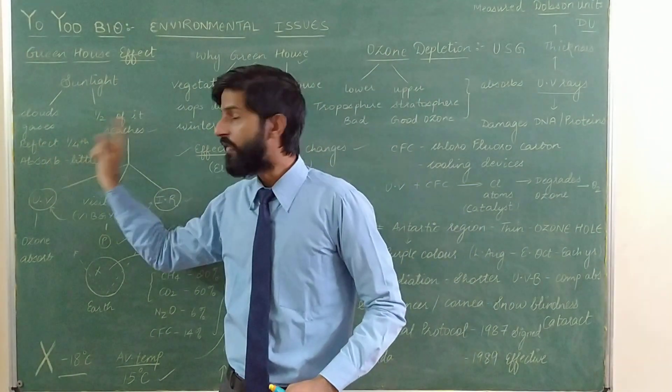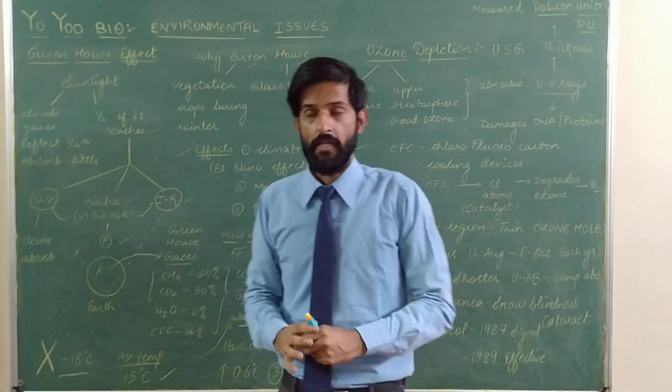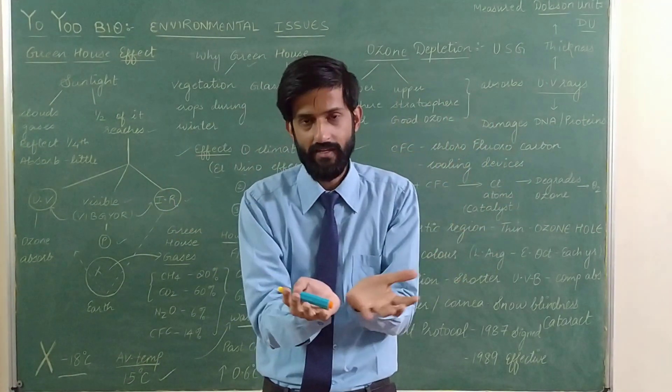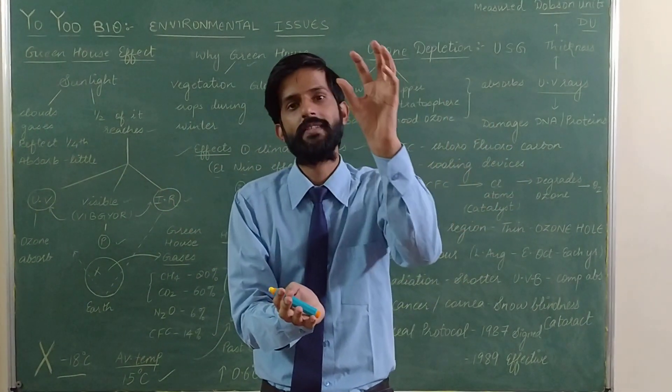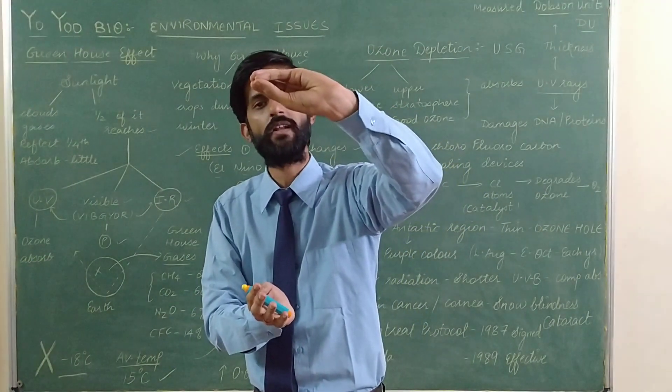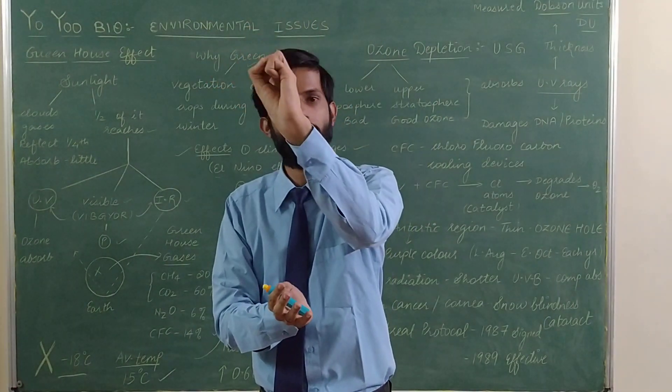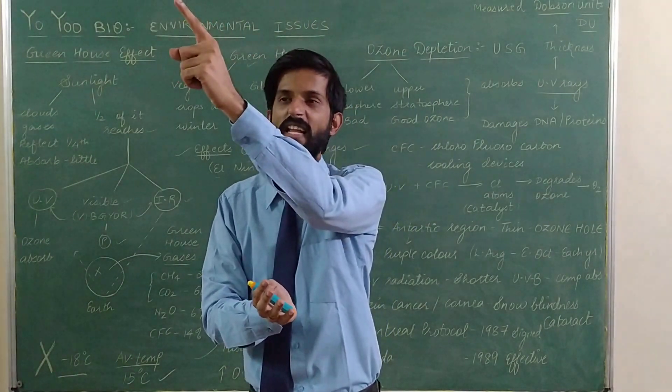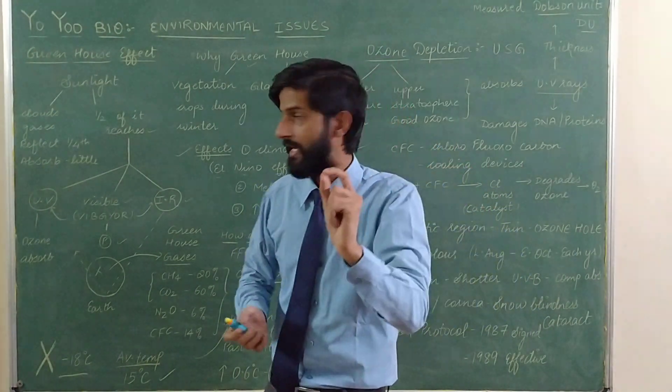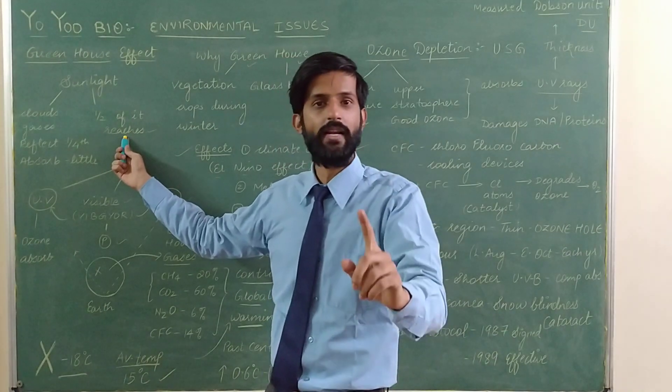To begin with, the sunlight which is coming towards our planet Earth - clouds and gases reflect one-fourth of this sunlight and absorb very little. 25% of the sunlight will be reflected and absorbed, so the other half will reach our planet Earth.